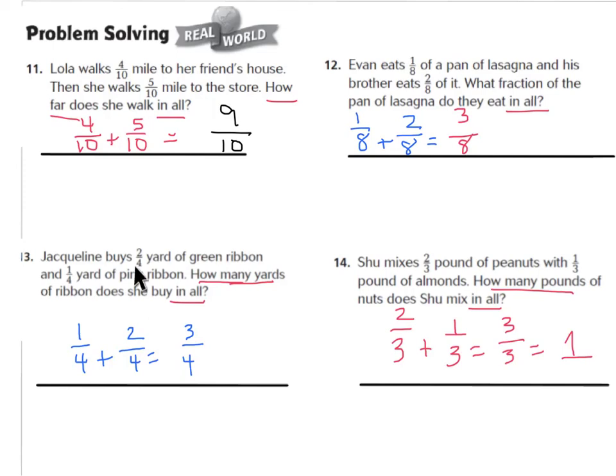For number 13, Jacqueline buys 2/4 of a yard of green ribbon and 1/4 of pink ribbon. How many in all would be 3/4 of ribbon. And for number 14, Shoe mixes 2/3 pounds of peanuts with 1/3 pounds of almonds. How many pounds of nuts—so you're doing the weight of different types of nuts—but it would be all together in all, would be 3/3 pounds of nuts, also known as 1 whole pound. I hope you got those four correct.